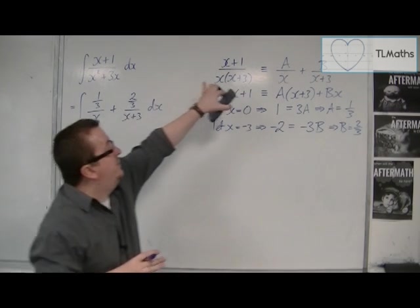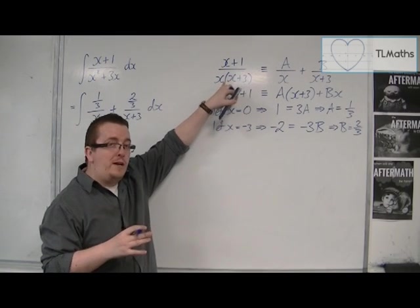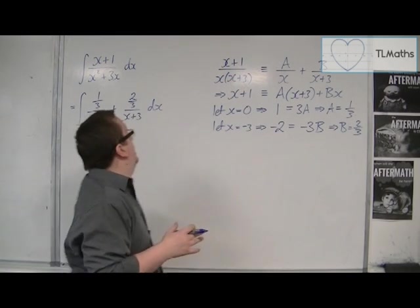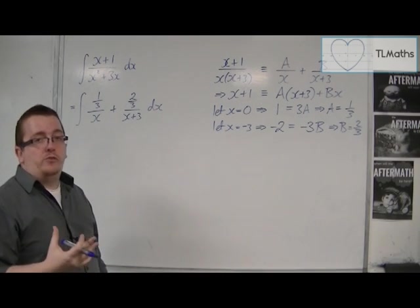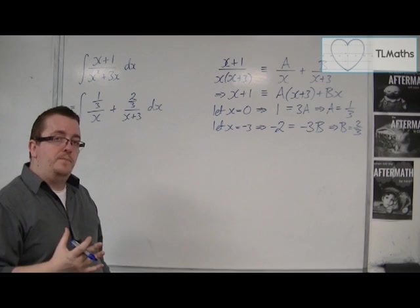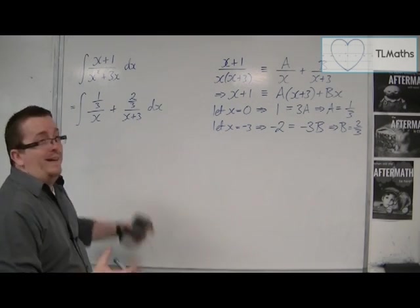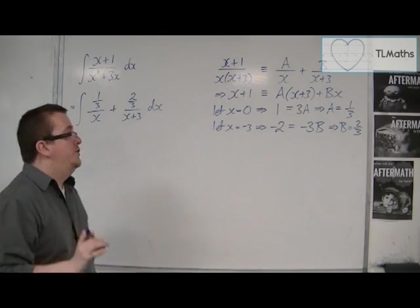If I was just doing this, so splitting this into partial fractions, I would write this as 1 over 3x plus 2 over 3 lots of x plus 3. OK, that's my final answer. But when it's in this format, it's a lot easier to see how to integrate it.